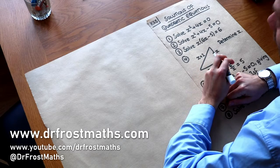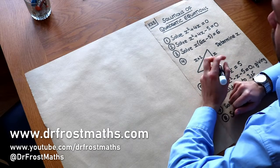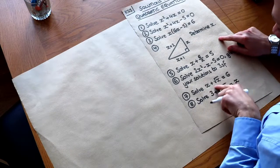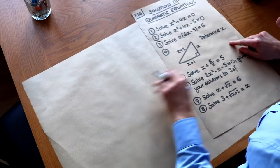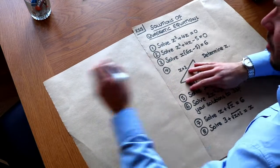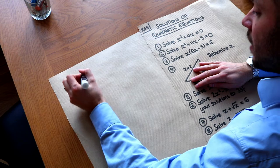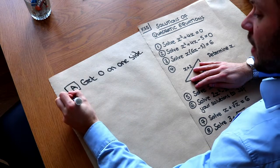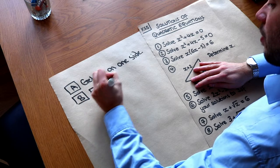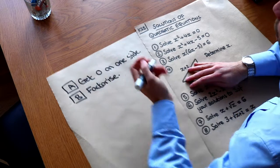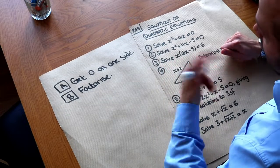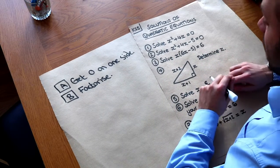Hello and welcome to this Dr. Frost Maths video on key stage 5 solutions of quadratic equations. Most of this is going to be a recap of what you might have done earlier at school, but there are harder types of questions which we'll explore towards the end. The key with solving quadratic equations is twofold: firstly to get zero on one side, and secondly to factorise what you then have on the other side. A quadratic equation is one in which you've got an x squared term, possibly an x term, and possibly a constant term, and no other terms.